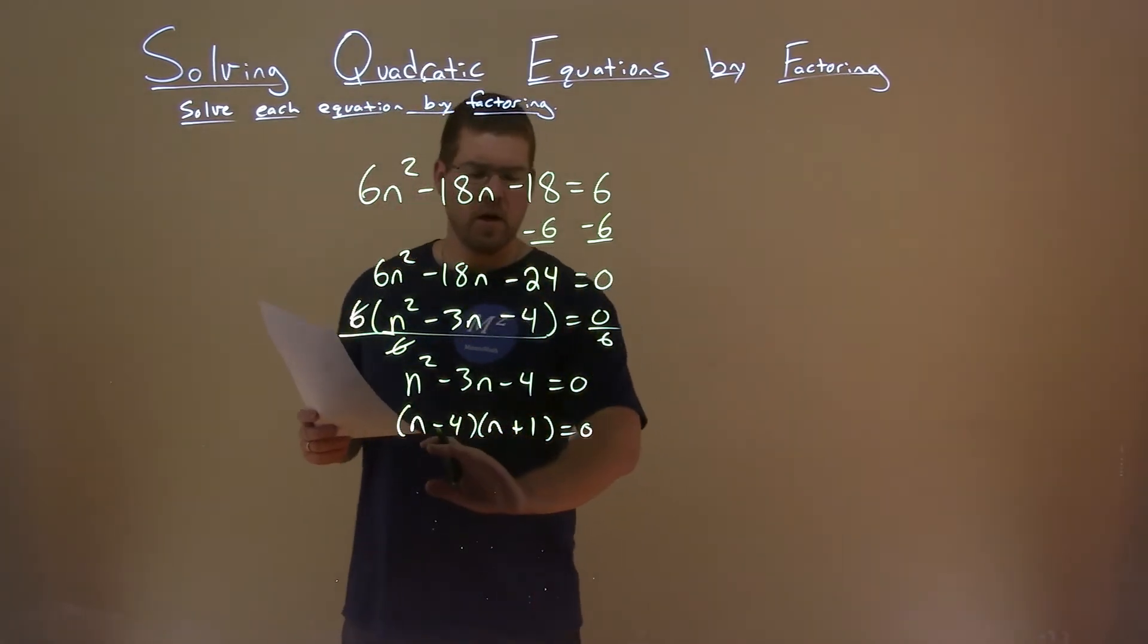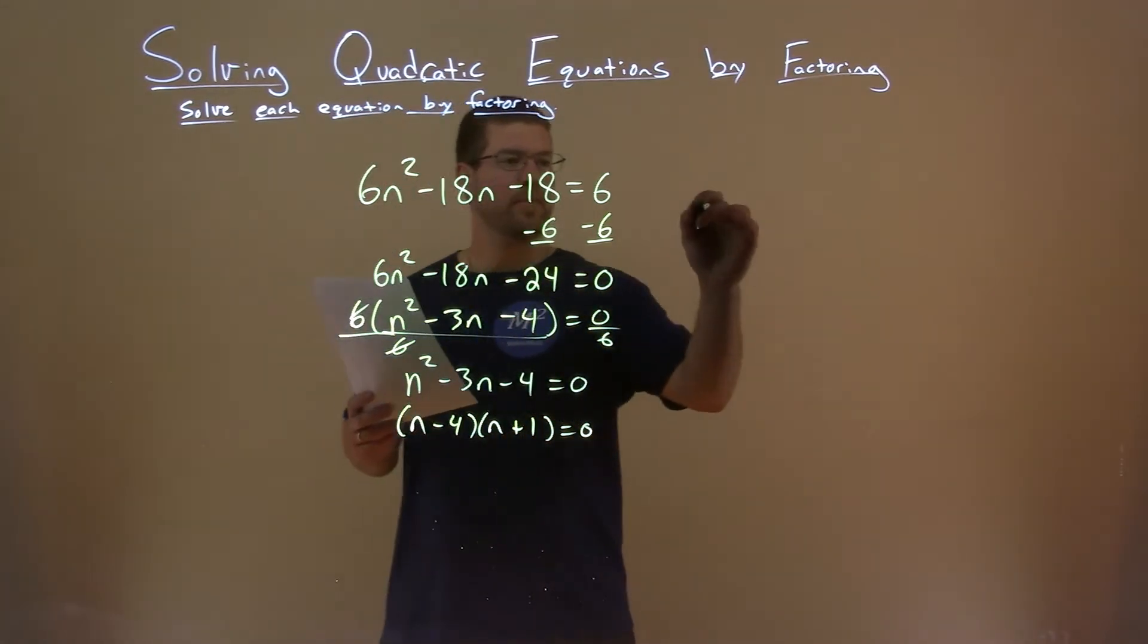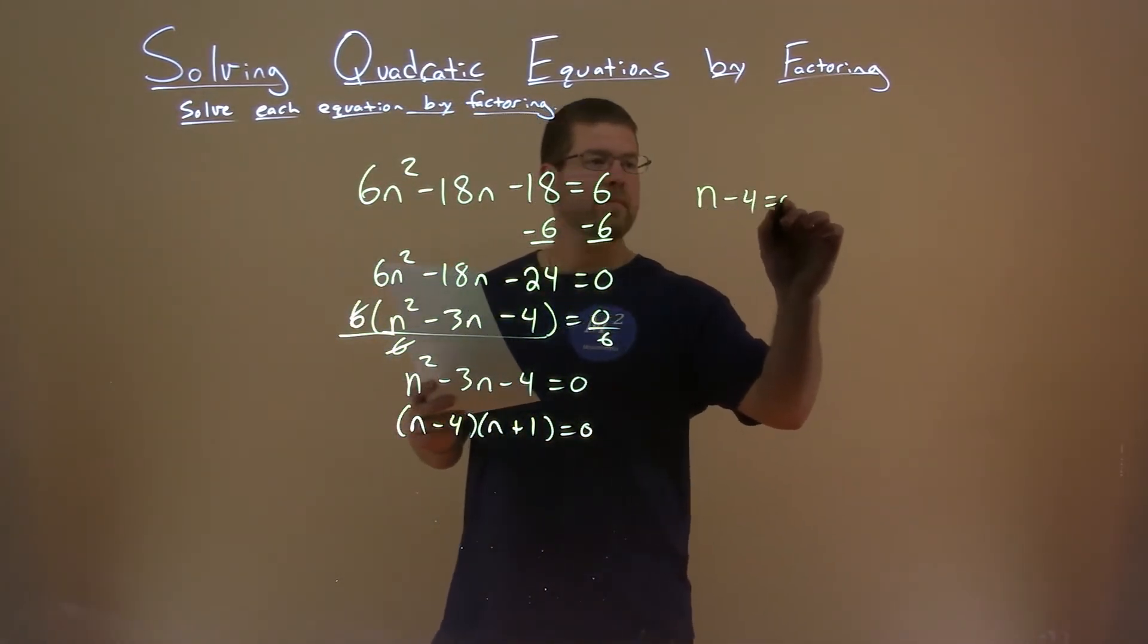So it seems like we have our answers. So now we have this in factored form, we can set both parts equal to 0.